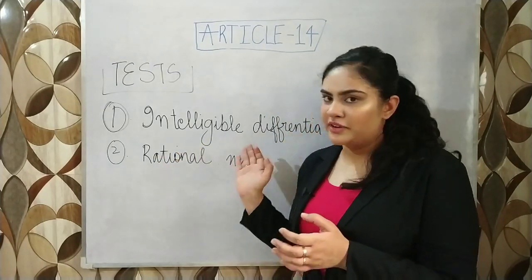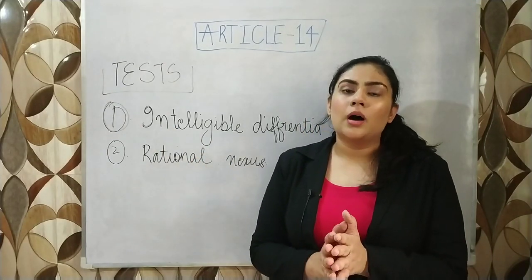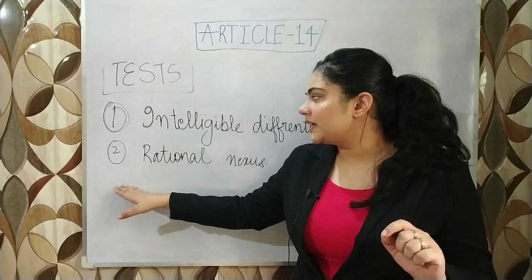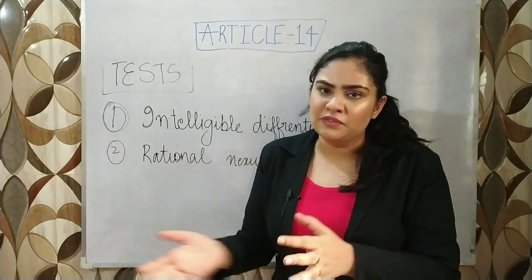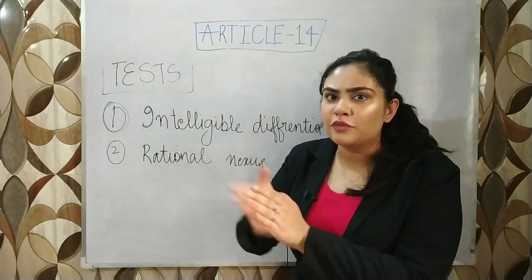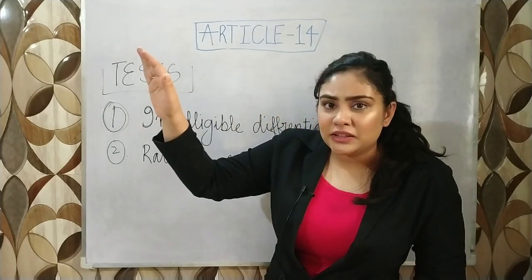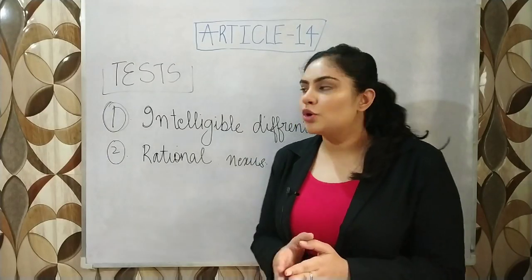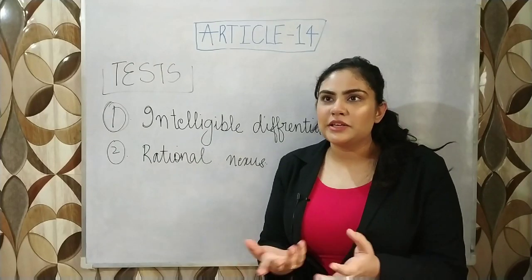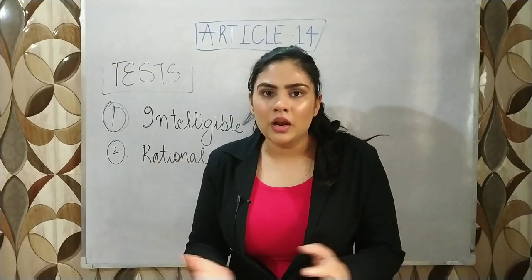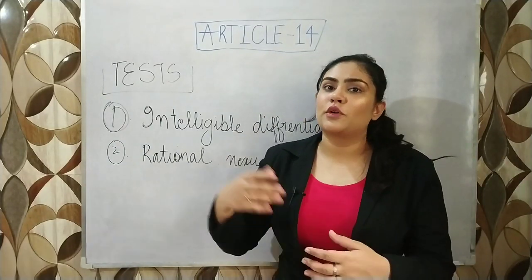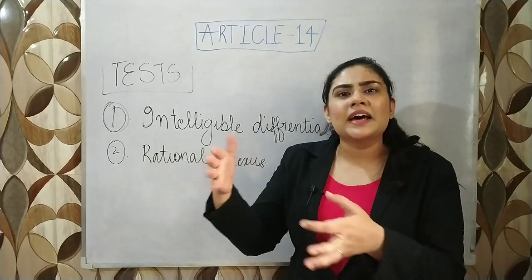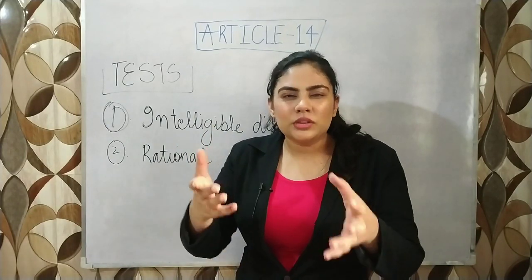The two tests are: first, intelligible differentia — which differentiates between the people grouped together and the rest; and second, rational nexus with the object sought to be achieved. There has to be a certain objective for the classification, and there has to be a rational, reasonable relation between that classification and that objective. For example, there are different sets of laws for lawyers and for doctors, and the Sikh community is exempted from wearing a helmet while riding a motorcycle — these are examples of valid classifications.